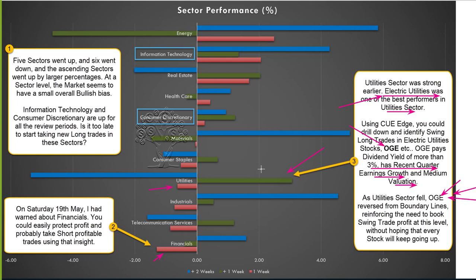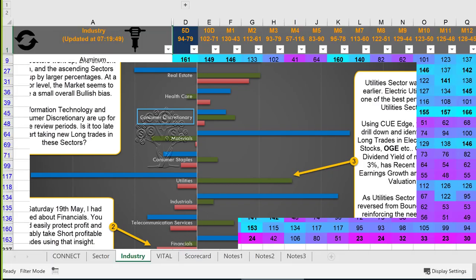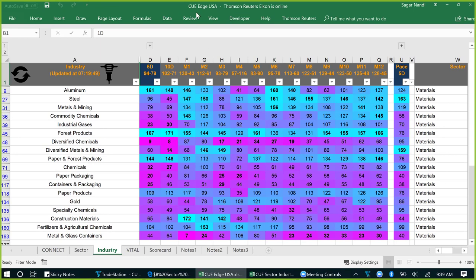Let's have a look at the Utilities sector using the Q-Edge drill-down to its industries, to see how we could identify Electric Utilities industry as the strongest and then drill down to OGE and its fundamentals. Using such a top-down approach, we can identify the strongest stocks in the strongest industries in the strongest sectors — having all the forces aligned with the trade before we take it.